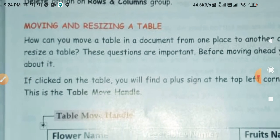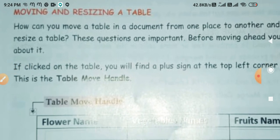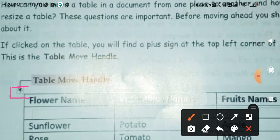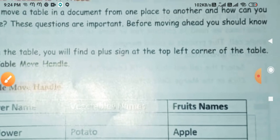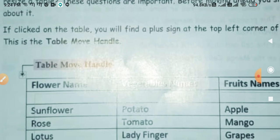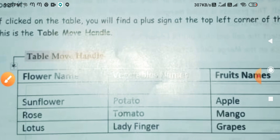These questions are important. If you click on the table, you will find a plus sign in the top left corner — this is the table move handle. If you keep the cursor on this plus sign and press it, you can drag the table anywhere in the document and drop it wherever you want, and the table will be set at that position.